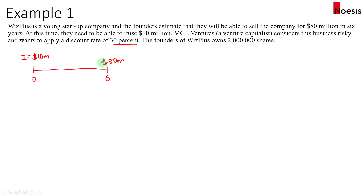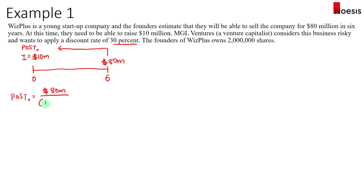What you may be asked is to calculate the post-money valuation. To calculate the post-money valuation you will have to find the PV of the exit value of $80 million — that will give you the post-money valuation. So the post-money valuation is the PV of this exit value, discounted using 30% for six years.